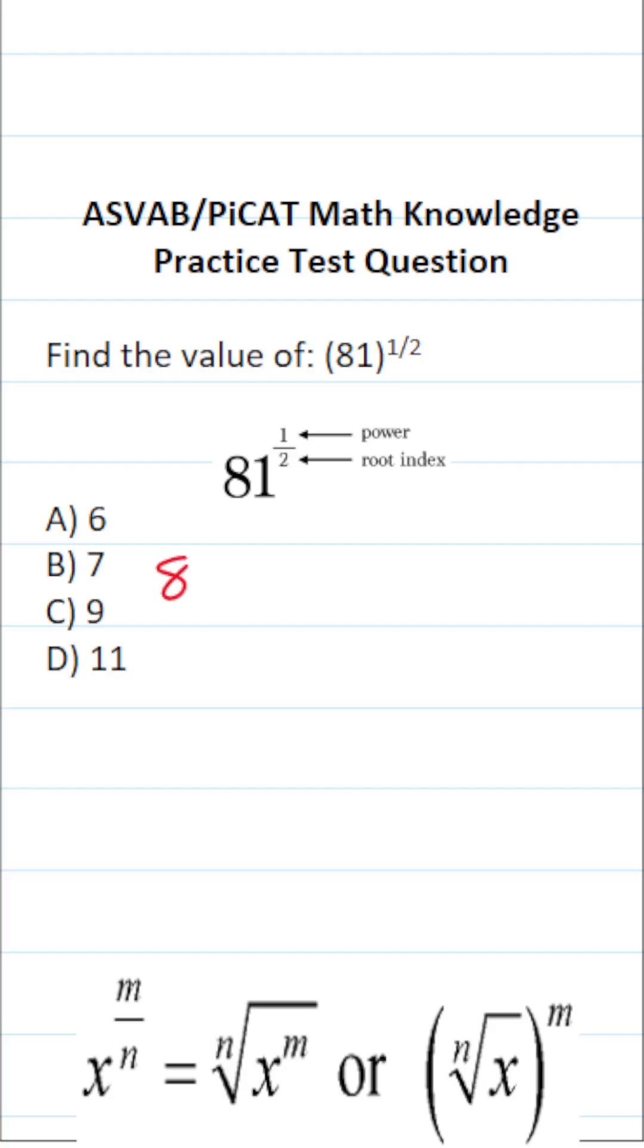On the ASVAB and PiCAT you're not given a calculator or reference sheet. For that reason I recommend you get in the habit of copying things down and working them out on your own scratch paper.